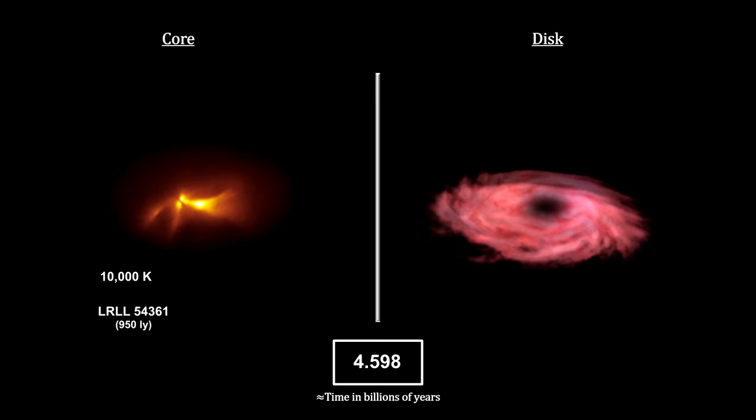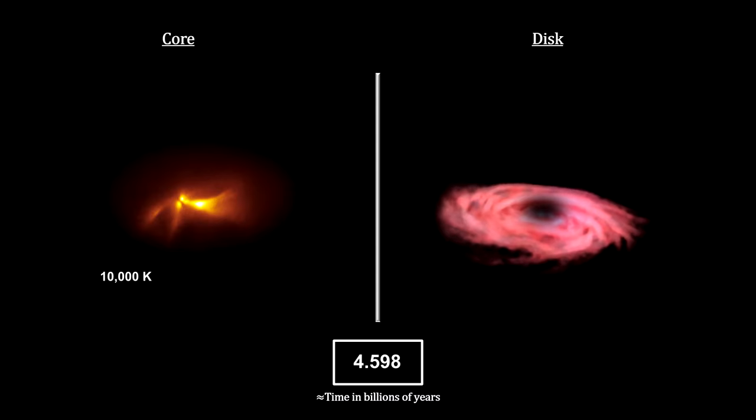During this time, most of the matter continues to reside in the circumstellar disk. It's losing large quantities of material to the central object, but by the time the protostar forms, the disk still has 99% of the solar system's mass. Some dust may have been colliding and sticking together, but the vast majority of whatever formed in the disk during this period was eventually lost to the forming star.